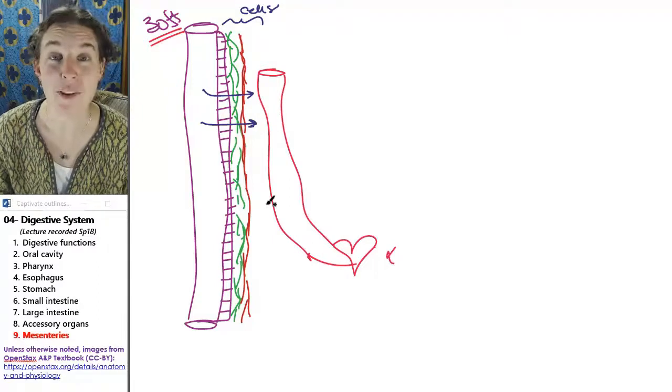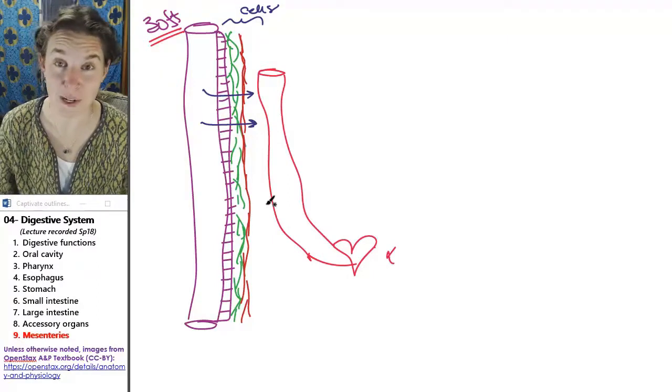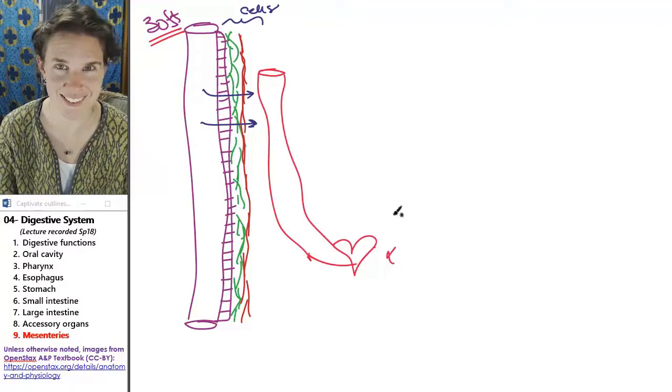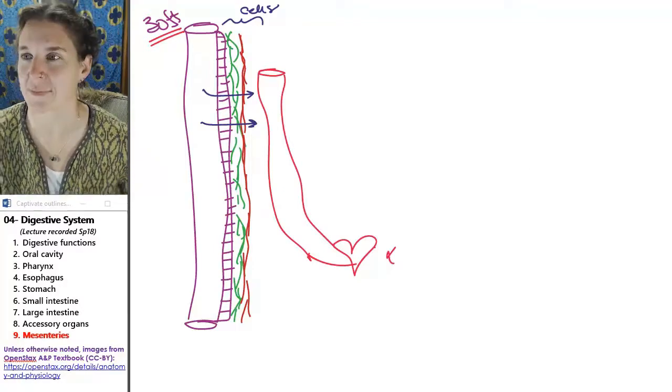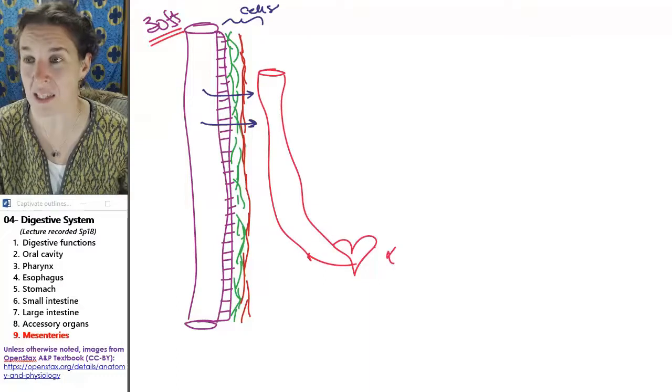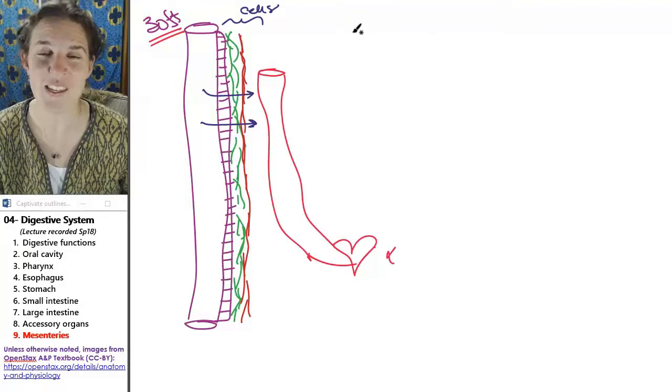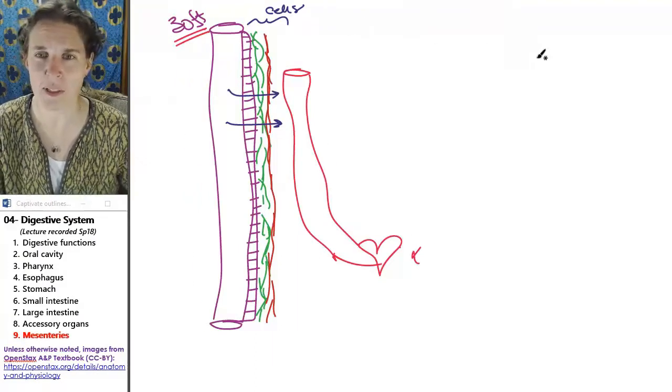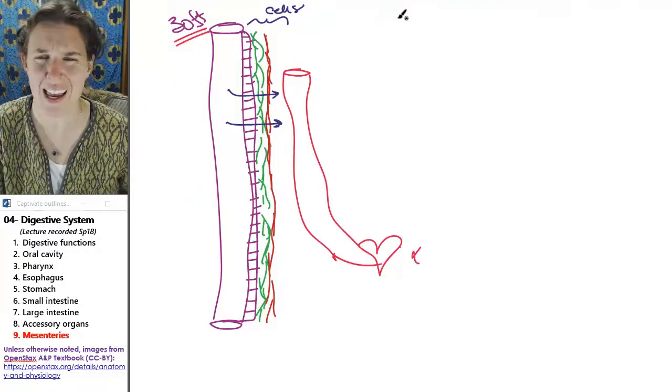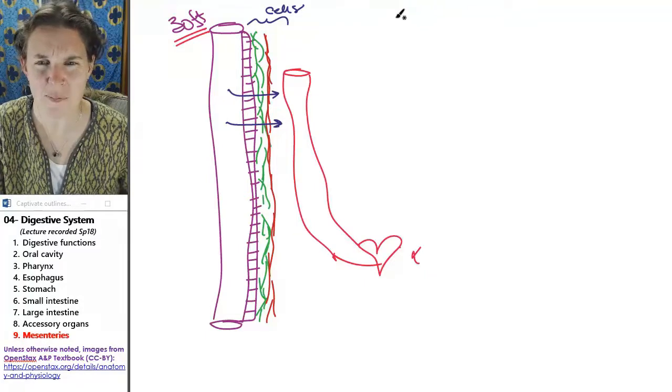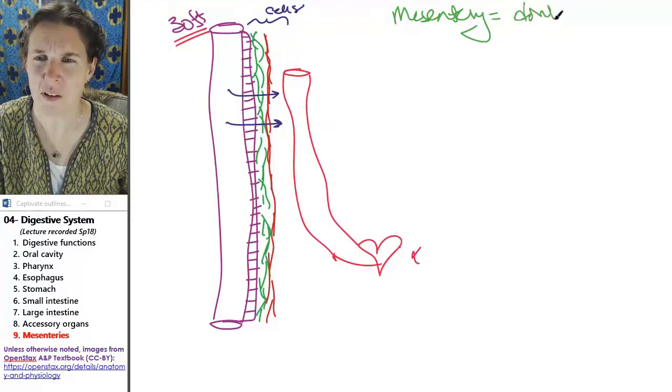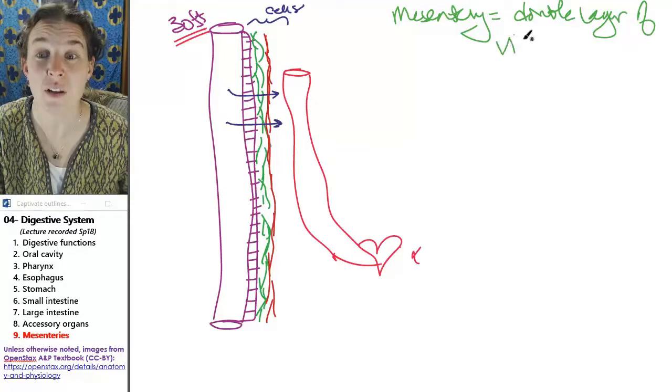So your body came up with a solution. Are you ready for what it is? Well, the hint is right here, the title of this section. The solution to this problem is a mesentery. And you might be like, dude, what the heck is a mesentery? And I will tell you that the mesentery is a double layer, a double layer of visceral peritoneum.